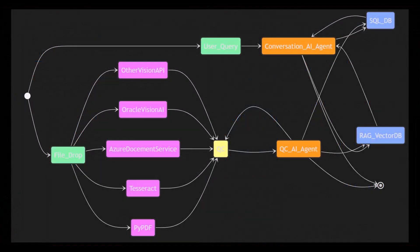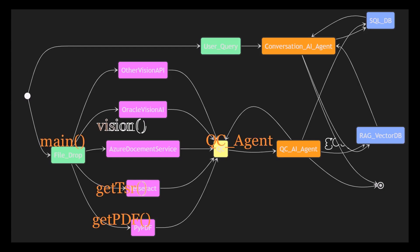Today, we are going to take a big step forward. We'll focus on building the core functionalities of our application — the parts that bring everything together. This includes writing generic functions to support tasks like running inferences on Ollama LLM models, working with PyPDF and Tesseract for OCR, and we are going to see how to leverage vision models.